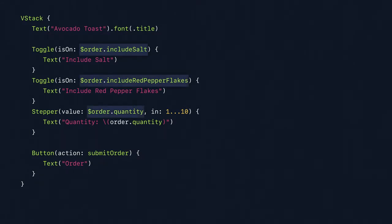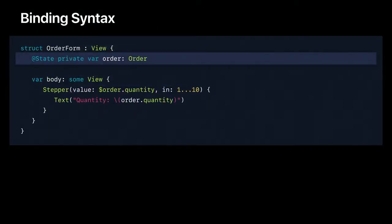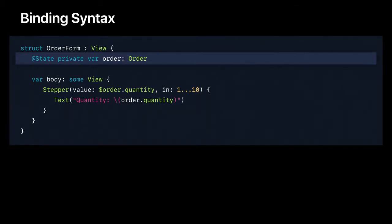Another kind of syntax you see here are those dollar signs preceding the arguments to our toggles and stepper. The leading dollar sign indicates that we're passing a binding to the control instead of just a normal value. In our example app, our stepper is contained within a view that depends on persistent state to track the current order. It declares a property for its order using a state attribute. When SwiftUI sees a property marked with this attribute, it automatically creates and manages persistent state behind the scenes and exposes the value of that state through this property.